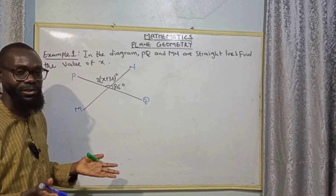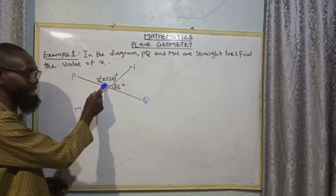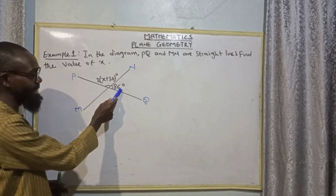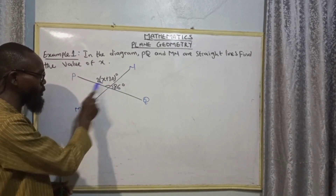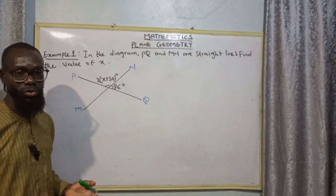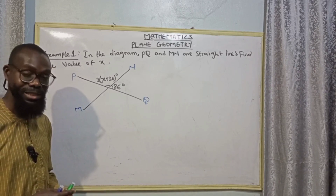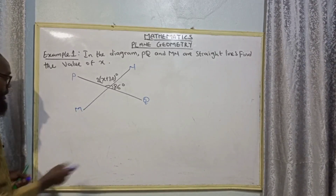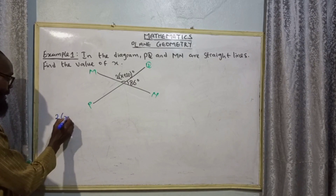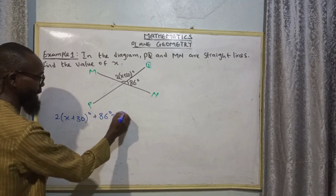But let's assume our mind is not going into that. We can see an intersecting line. Since this one is 2(x + 30), likewise the angle that is here must be here as well. Similarly, 66 degrees must be here as well. So when we sum up everything together it equals 360 degrees — sum of angles at a point. But let's look for the simplest one: 2(x + 30) + 66 = 180 degrees.